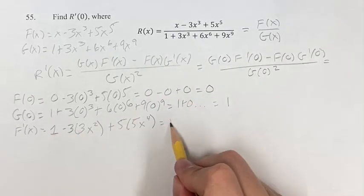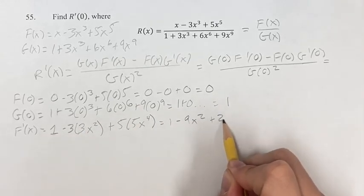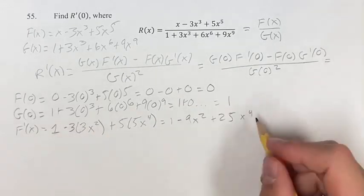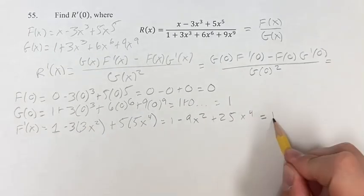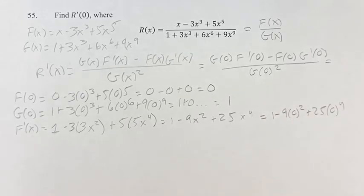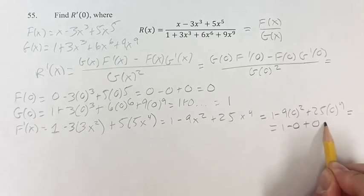So this is 1 minus 3 times 3 is 9x squared plus 25x to the 4th, and at x is equal to 0, this is 1 minus 9 times 0 squared plus 25 times 0 to the 4th, which is 1 minus 0 plus 0, which is equal to 1.